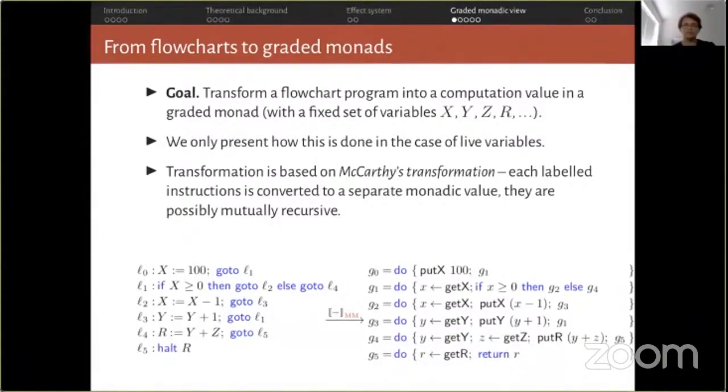Effect systems in an imperative setting are a rather raw application of the theory. We tend to look at functional languages. Indeed, we can look at a functional programming language augmented with assignments to mutable variables drawn from some fixed set of locations. However, we can go beyond that and present a graded monadic view. Our immediate goal is to transform a flowchart program into a computation value in a graded monad, where grades correspond to the same transfer functions as before. In this talk, I will only show this translation and the graded monads for live variables. The transformation for flowcharts to graded monadic code is based on McCarthy's transformation. McCarthy demonstrated that flowchart programs can be translated to pure functional programs, in which each statement corresponds to a function, with control flow achieved by mutual recursion.